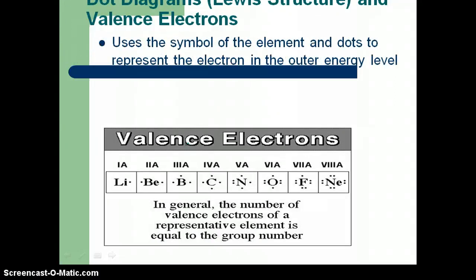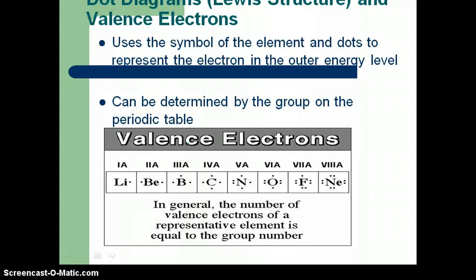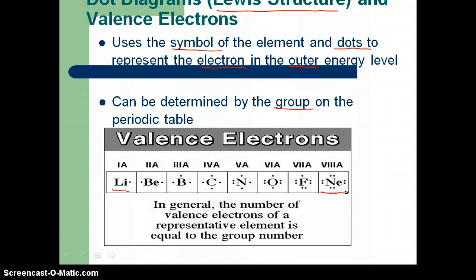So we can represent these outer electrons by showing them in a dot diagram. These are also called a Lewis structure and you may see either one of them on a worksheet, either a dot diagram or a Lewis structure. And basically all it does is use the symbol and dots for the outer electrons. And it can be determined by the group that they are in. So you can see some examples here. Lithium is in group one and it has one dot. Where neon is in group eighteen or group eight and it has eight outer electrons.